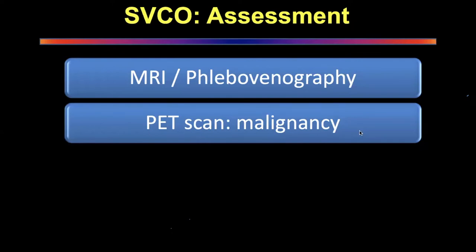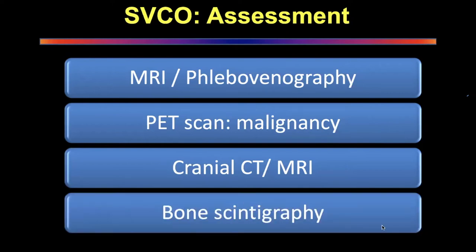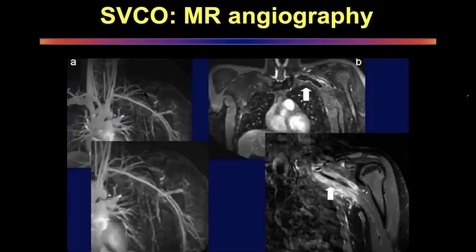Sometimes bone scintigraphy is also done in cases of lymphoma to look for skeletal involvement. MRI angiography clearly shows beautiful delineation of blood vessels — the collateralization, the IMA being distended, collateral intercostals being distended — it is a very good tool for looking at vascular involvement. However it takes 40 to 45 minutes for the patient to lie still, so contrast-enhanced CT remains the gold standard in these patients.